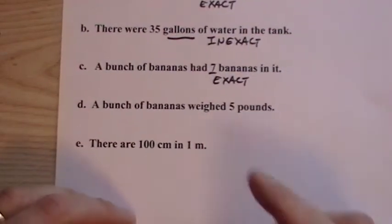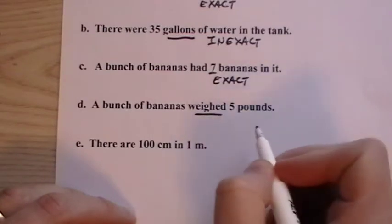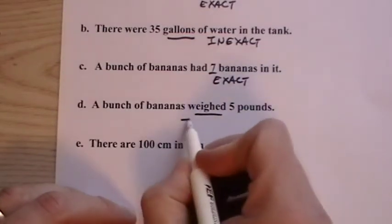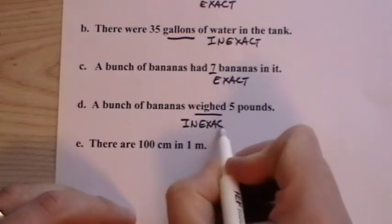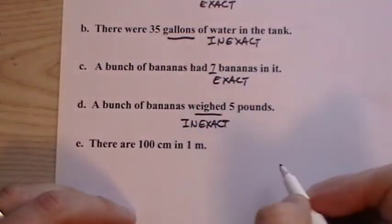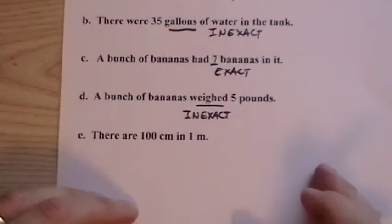A bunch of bananas weighed five pounds. Weighed tells us that we did a measurement. If you did a measurement, then it's inexact. You didn't count out the five pounds. It had to be weighed. You had to measure it.